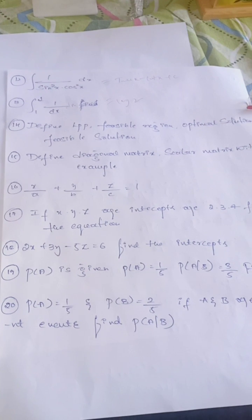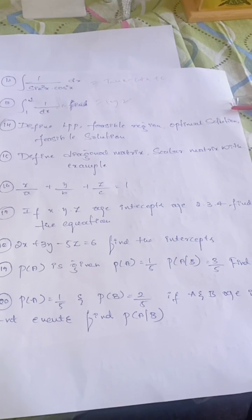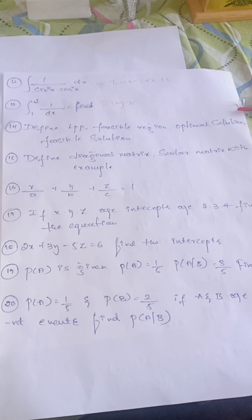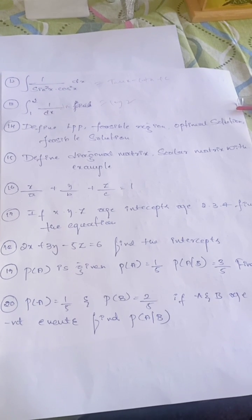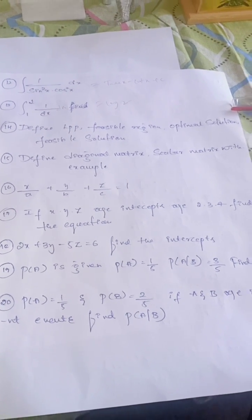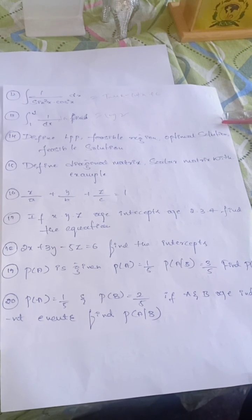Diagonal matrix, scalar matrix example. In 3D geometry, x by a plus y by b plus z by c equal to 1, intercept form. One more question they can ask like this: x, y, z dot intercepts.